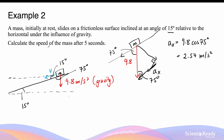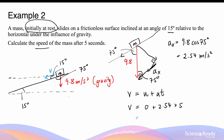This acceleration is useful in finding the speed of the mass after 5 seconds. Using the kinematic equation v equals u plus at, u is 0 because the mass is initially at rest, and the acceleration is 2.54 times 5 seconds. This gives a velocity of 12.7 meters per second going down the incline. Since the question asks for speed only, we can leave the answer as 12.7 meters per second without the direction.